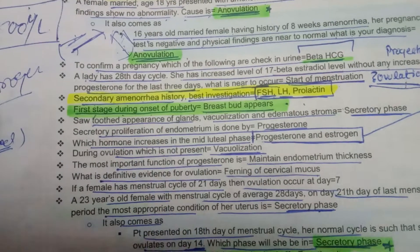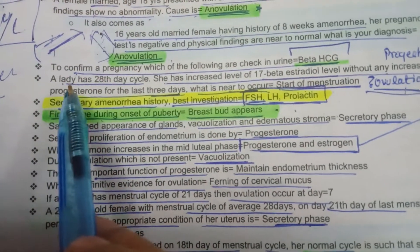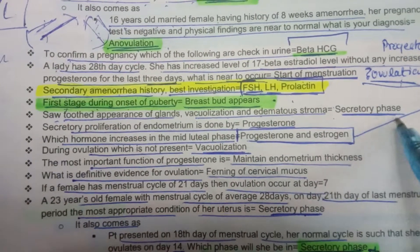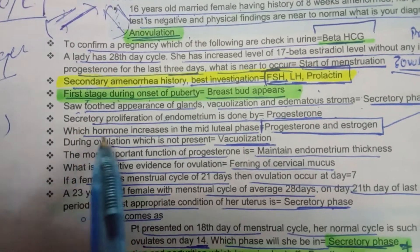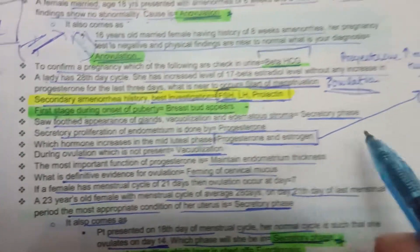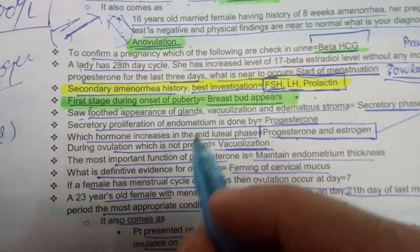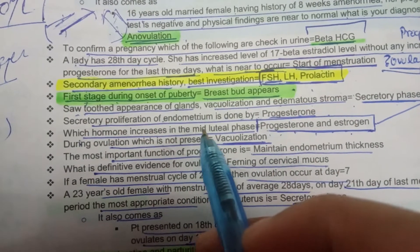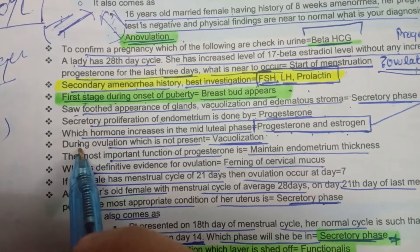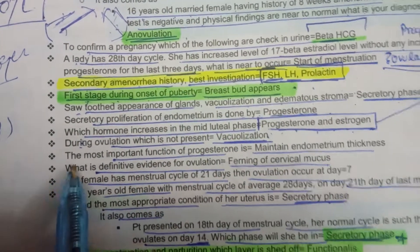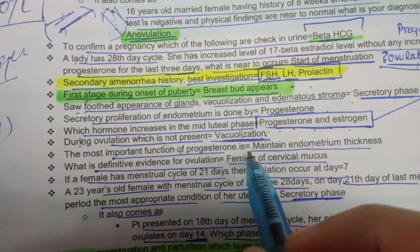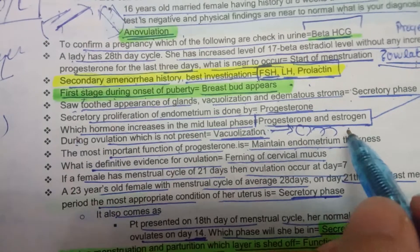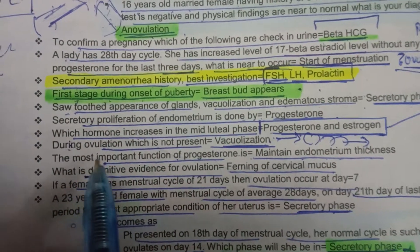In the secretory phase, the first signs are saw-toothed gland appearance, vacuolization, and edematous stroma. Secretory proliferation of endometrium is done by progesterone. In the mid-luteal phase, both progesterone and estrogen rise, but progesterone becomes dominant. Vacuolization is absent before ovulation because corpus luteum has not yet formed, so progesterone hasn't arrived yet. The most important function of progesterone is maintaining endometrial thickness.